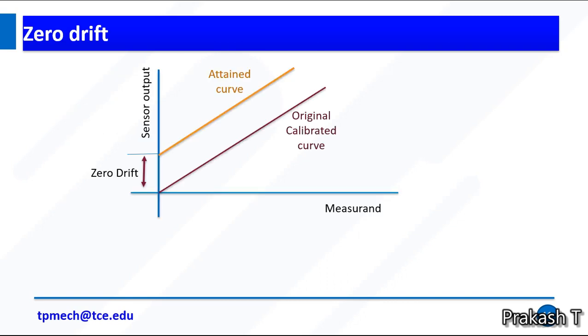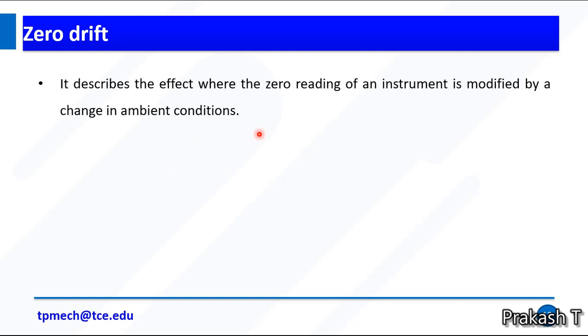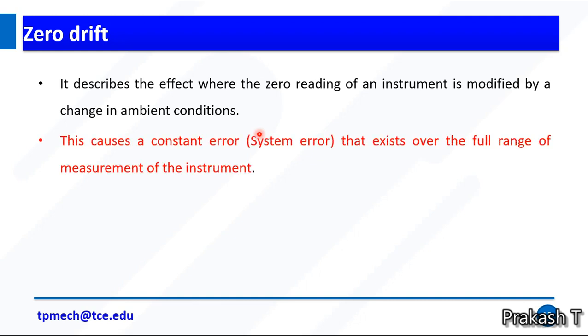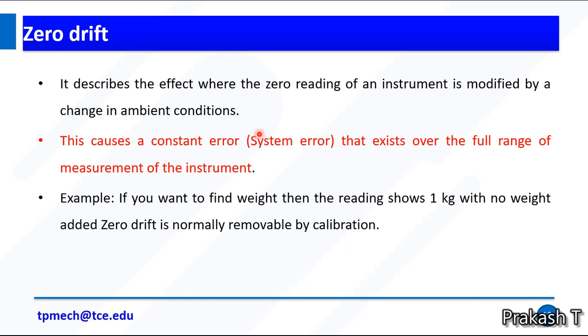Zero drift: this is the original calibrated curve and then we have an attained curve. For example, I am not giving any input but it shows the output 2. This is zero drift. The line attained curve and original calibrated curve should be parallel. A shifting calibration curve in vertical direction is called zero drift. It describes the effect where the zero reading of an instrument is modified by the change in ambient conditions. This causes a constant error that exists over the full range of measurement. For example, if you want to find weight, the reading shows 1 kg with no weight added. Zero shift is normally removed by calibration.